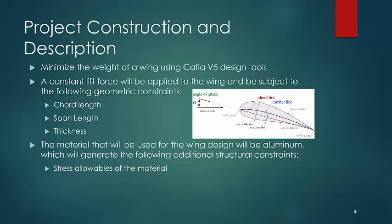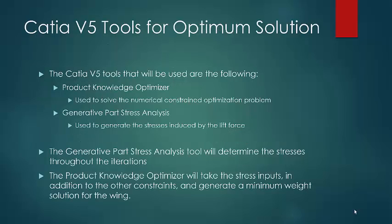Additionally, this wing will be subject to a constant lift force that will be applied, and thus it will generate some stresses that the wing will need to sustain. These will be the additional parameters and constraints that the wing needs to adhere to in order to minimize the weight and provide an actual solution.